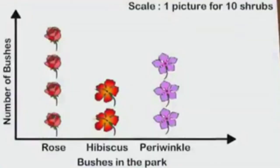Let's see one more example. In the park in front of my house, there are 40 rose bushes, 20 hibiscus shrubs and 30 periwinkle shrubs. I will make a table to show this using a picture. There are three types of flowers: rose, hibiscus and periwinkle. But I can't draw 40 rose bushes, 20 hibiscus shrubs and 30 periwinkle shrubs individually. That's why I will use a scale.